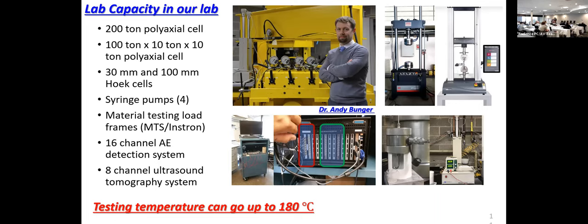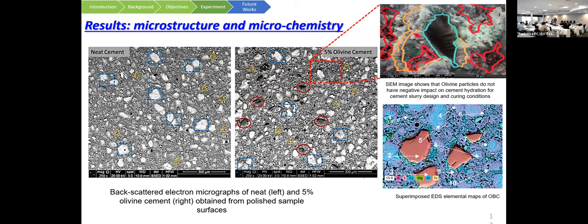In our lab, we have two polyaxial cells — one at 200-ton capacity and another at 100-ton. Sample dimensions can go up to 20 inches cubic. For cylindrical samples, we have two hook cells at 30 mm and 100 mm diameter. For material testing frames, we have Instron and MTS, capable of fatigue, creep, and tension tests. We have a 16-channel AE detection system and an ultrasound tomography system. Importantly, all testing can go up to 180°C.